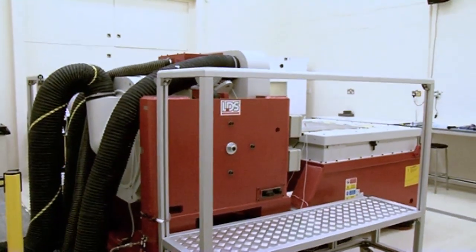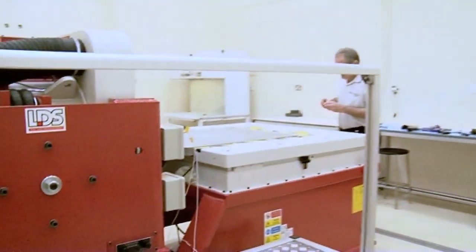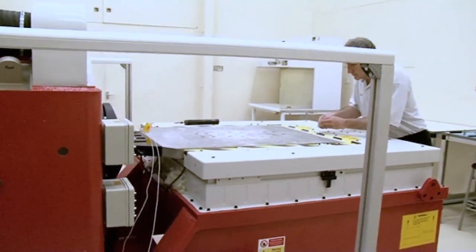So this is our vibration facility and this is our shaker. At the moment it's set up with what's called a slip table. This is a big metal plate that's set on a set of bearings that moves back and forth. It moves left to right as we're standing.